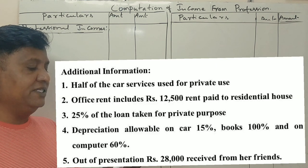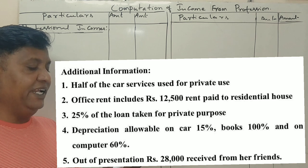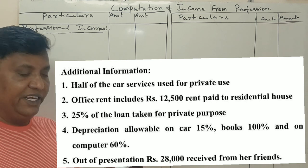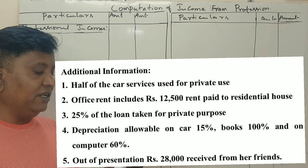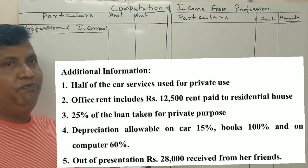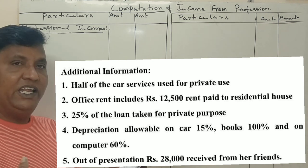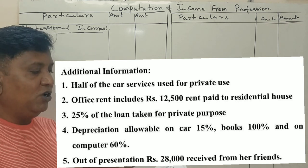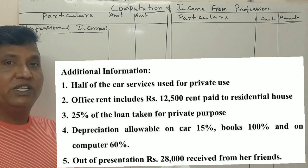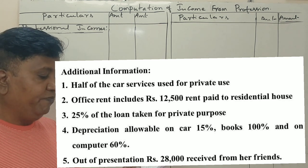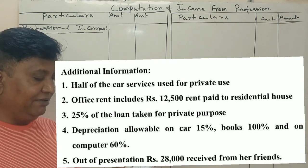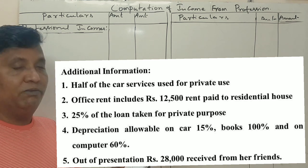Additional information: Half of the car is used for private use. Office rent includes 12,500 rupees rent paid for a residential house. 25% of the loan taken is for private purpose, so 75% of the interest on loan will be used for the profession. Depreciation rate on car is 15%, books 100%, computer 60%.